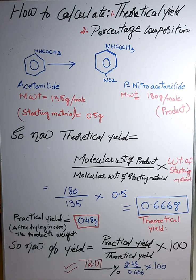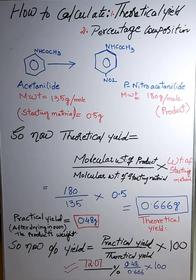Para nitro acetanilide was 80% of the compound we prepared. I explained the reaction mechanism in my last lecture and how the reaction proceeded in a series of steps. To make you more familiar with the experiment, let me explain the experimental procedure again: we took 0.5 grams of acetanilide and added 1 ml glacial acetic acid and sulfuric acid, then cooled the flask in an ice bath.